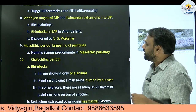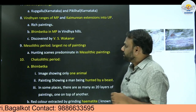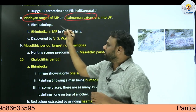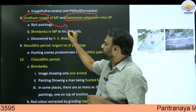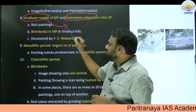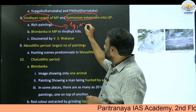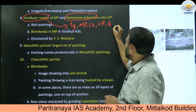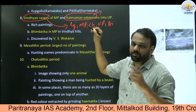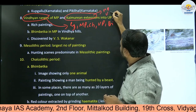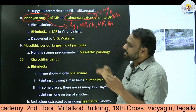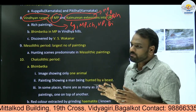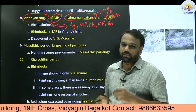The Vindhya ranges of Madhya Pradesh and Kaimur extensions into Uttar Pradesh also contain important sites. The Vindhya ranges spread across five states: Gujarat, Madhya Pradesh, Chhattisgarh, Uttar Pradesh, and Bihar. The Kaimur extensions spread across three states: Madhya Pradesh, Uttar Pradesh, and Bihar. In these places - particularly the Vindhya ranges of Madhya Pradesh and Kaimur extensions of Uttar Pradesh - we find rich paintings of the prehistoric period.